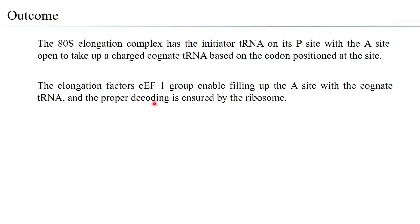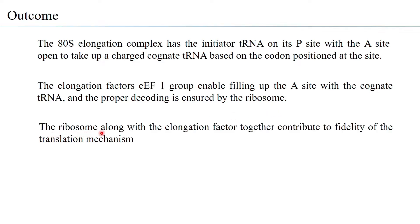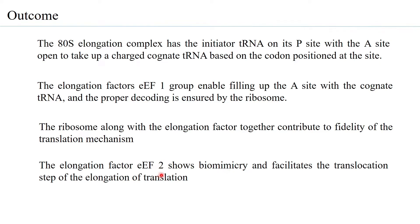The elongation factor EEF1, which has several components, enables filling up of the A site with the cognate tRNA, and proper decoding is ensured by the ribosome. The ribosome along with EEF1 contribute to fidelity of translation, and elongation factor EEF2 shows biomimicry and facilitates the translocation step. These steps are very similar to what happens in prokaryotes as well. Let us look at how from an 80S initiation complex the ribosome machinery moves to an 80S elongation complex.